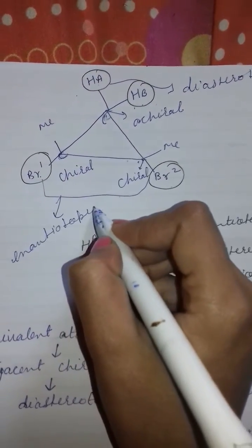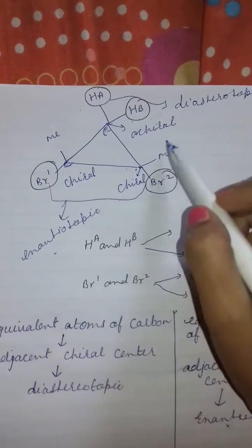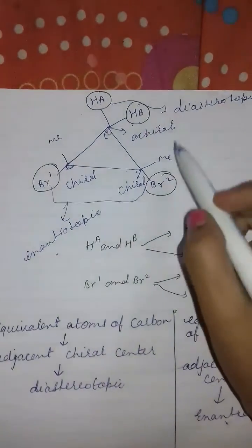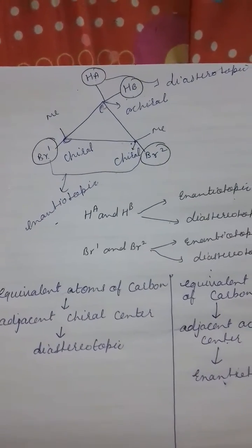It is a short trick. We can easily find enantiotopic and diastereotopic ligands present in a molecule by using this trick. Thanks for watching. Have a nice day.